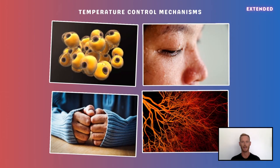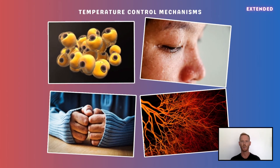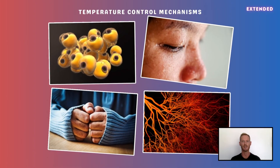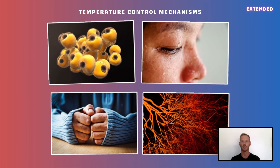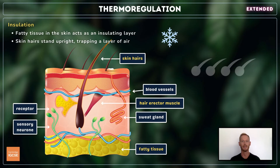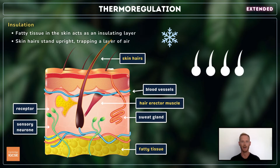Thermoregulatory mechanisms include insulation, sweating, shivering, and adjusting the diameter of blood vessels — that is vasodilation and vasoconstriction. In cold conditions, fatty tissue in the skin acts as an insulating layer to prevent excessive heat loss from the body, and hair erector muscles contract, causing skin hairs to stand upright and trap a layer of air between them. This air acts as an insulator, reducing heat loss.